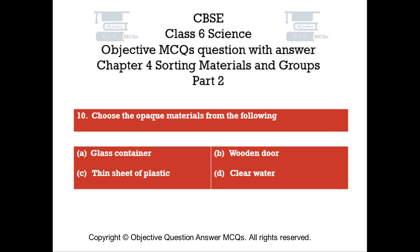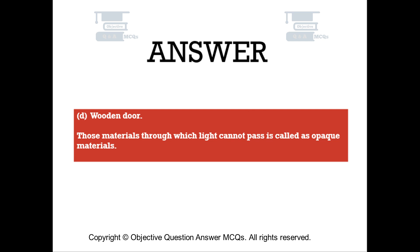Question number 10. Choose the opaque materials from the following. Option A: Glass Container. Option B: Wooden Door. Option C: Thin Sheet of Plastic. Option D: Clear Water. The right answer is Option B — Wooden Door. Those materials through which light cannot pass are called opaque materials.